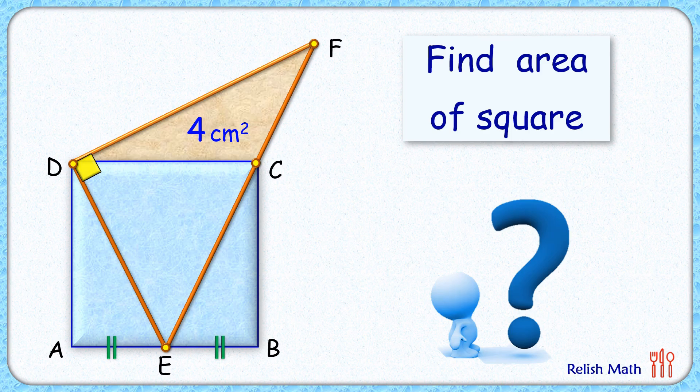In this interesting question, ABCD is given as a square. E is the midpoint of side AB. E is joined to the opposite vertices D and C, and these lines are extended to form a right angle triangle EFD as shown in the figure. If the area of triangle DCF is 4 centimeter square, using this limited data we have to find the area of this square ABCD.